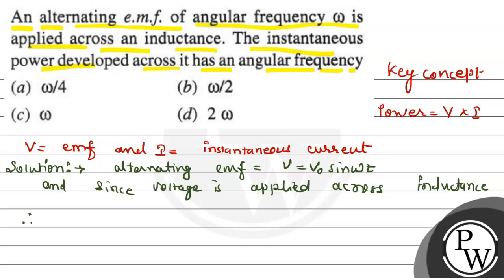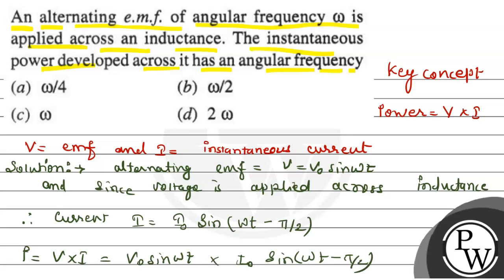Therefore, the current will be I equals to I naught sine. In inductance, the current always lags by pi by 2 phase angle, so the value becomes I equals to I naught sine omega t minus pi by 2. Now we need to calculate power.